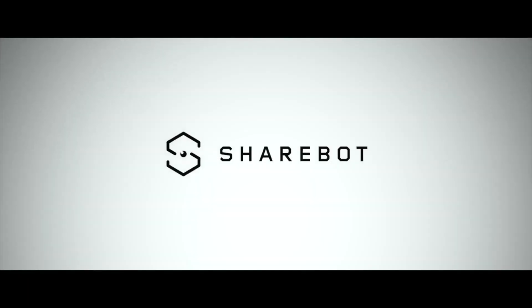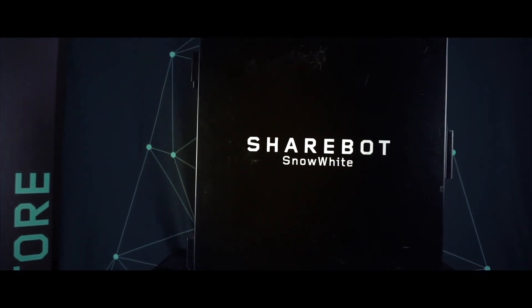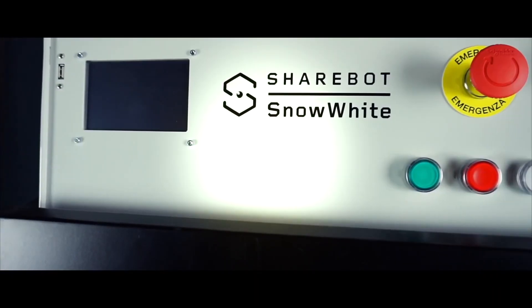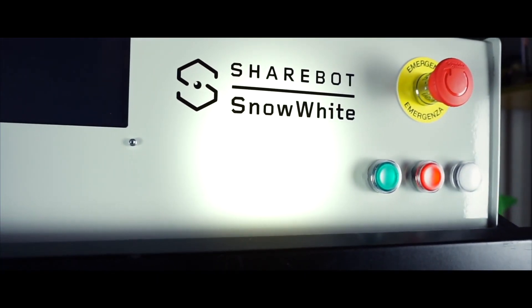The Sharebot Snow White 2 is an Italian SLS 3D printer with the capacity to print in a wide range of materials from nylon, TPU, glass, carbon and even aluminum. It has a rather small print volume of around 100x100x100mm and costs around $40,000.